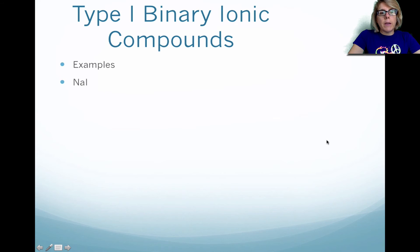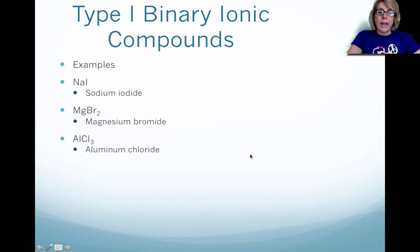Okay, so here we go. First example is NaI. Na is the cation. I is the anion, and it becomes sodium iodide. Here we have MgBr₂. Mg is the cation. Br is the anion, and it becomes magnesium bromide. So notice we don't put ion in the name at all. We have AlCl₃, and it becomes aluminum chloride. CaS, so Ca is the cation, S is the anion, and that becomes calcium sulfide. And then K₂O. K is the cation, O is the anion, and it becomes potassium oxide. So notice the anion is the only element that changes its name.